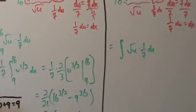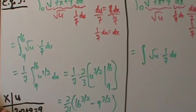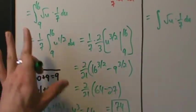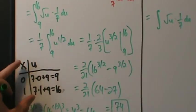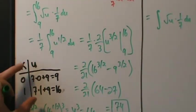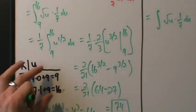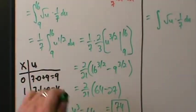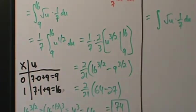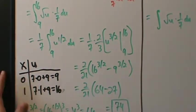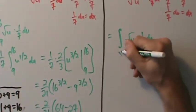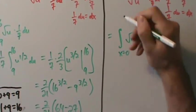So if we don't want to use the chart to change the limits of integration to the new variable u, we can instead label the limits as x = 0 to x = 1 and keep integrating, then back-substitute at the end.